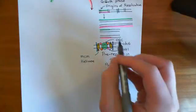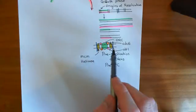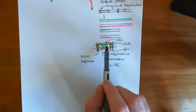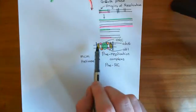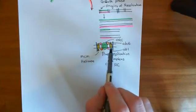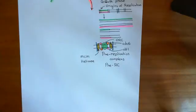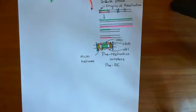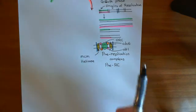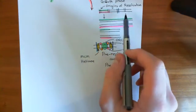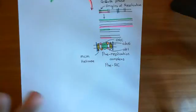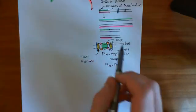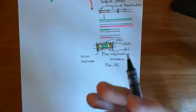So the pre-replication complex consists of the two CDC6 proteins, the origin recognition complex, the CDT1 proteins, and the MCM helicase enzymes — all mounting on origins of replication. This is happening in the G1 phase on every origin of replication along every single chromosome in the cell. So you are starting to get ready to divide by making these pre-replication complexes.